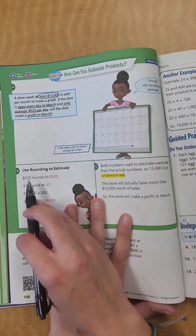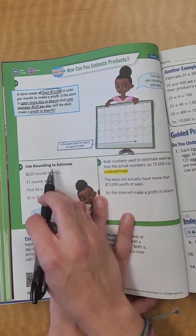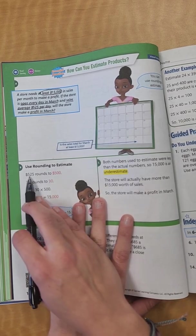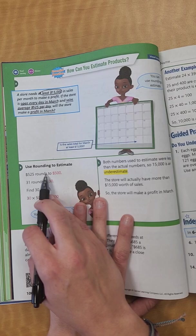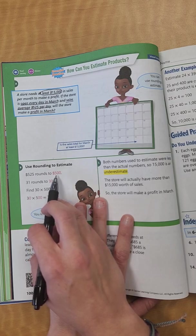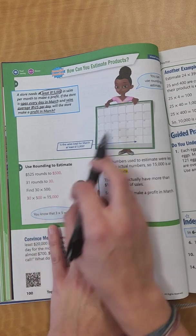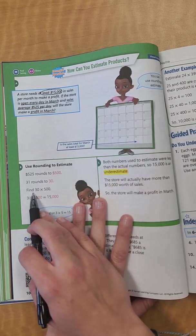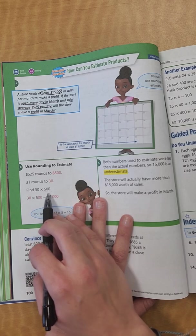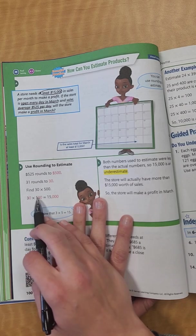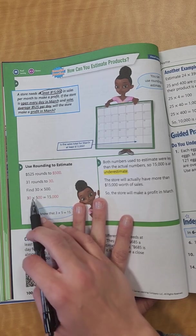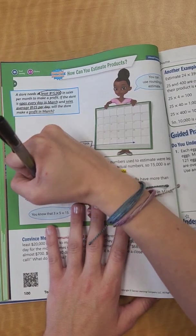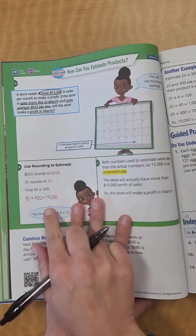So what we're doing right here, it says use rounding to estimate, which is typically what we do. Normally, that's a little bit easier. So we know that $525 rounds to about $500. 31, remember, 31 days in the month of March rounds to 30. So you would multiply 30 times $500. 3 times 5 we know gives us 15, and then we add 1, 2, 3 zeros to the end, so it would be $15,000.